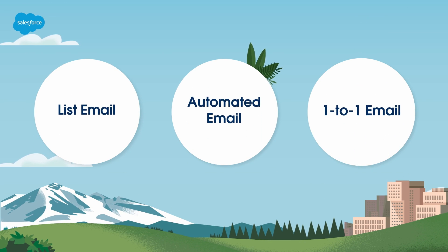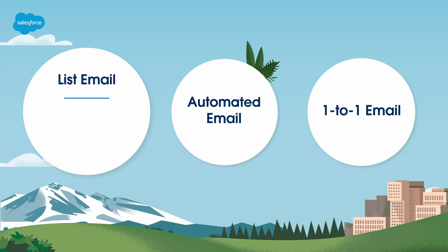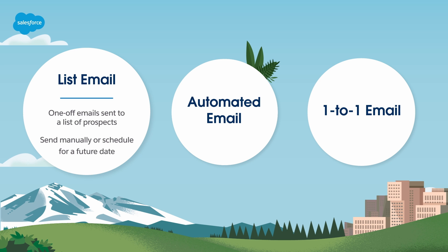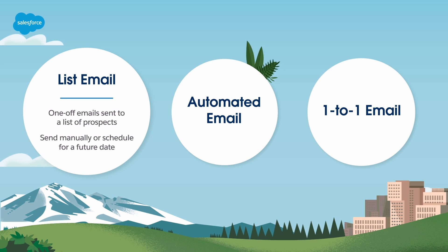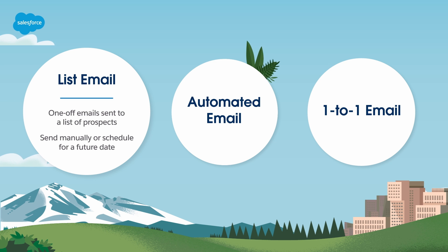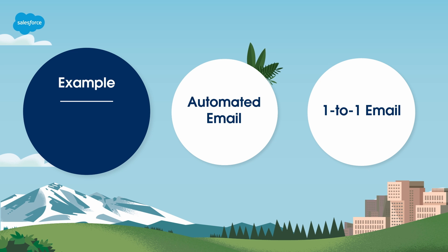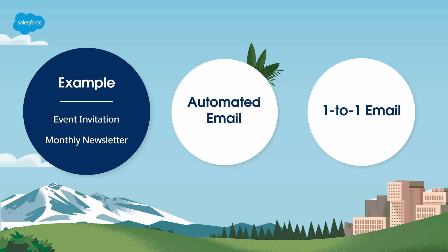First, let's discuss the three different ways you can send emails from Account Engagement. Our first option, and the one we'll be focusing on today, is list emails. These are one-off emails sent to a list of prospects. They can be sent manually, scheduled for a future date, or — if you have an advanced or higher edition — you can use Einstein Send Time Optimization to let AI determine the optimal send time for each prospect on the list. These types of emails are ideal for ad hoc or time-sensitive sends, like an invite to an event or a monthly newsletter.